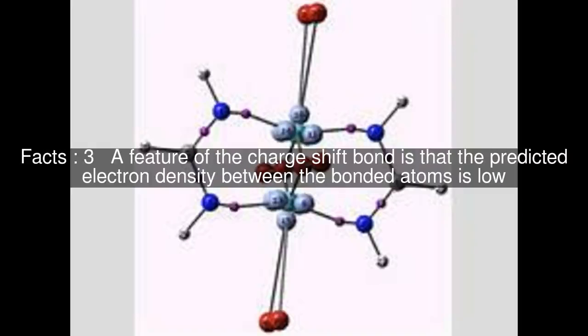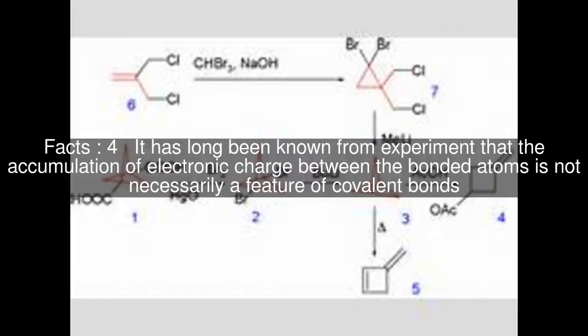A feature of the charge-shift bond is that the predicted electron density between the bonded atoms is low. It has long been known from experiment that the accumulation of electronic charge between the bonded atoms is not necessarily a feature of covalent bonds.